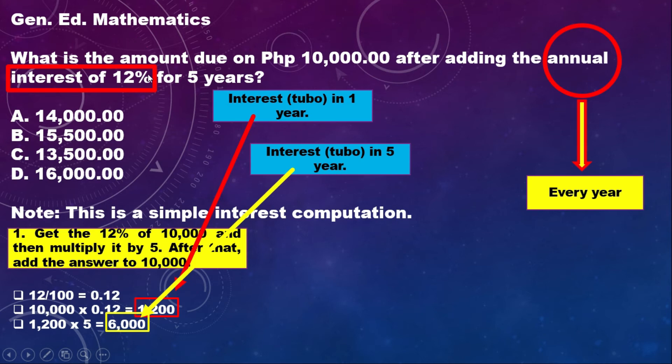Let's go back again to the question. The question asks how much will you pay in total for what you borrowed plus the 5 years of 12% annual interest. Now we've calculated the 12% annual interest for 5 years. We just need to add this to the principal amount borrowed, which is 10,000. So 10,000 plus 6,000, that is 16,000. That is the final answer.